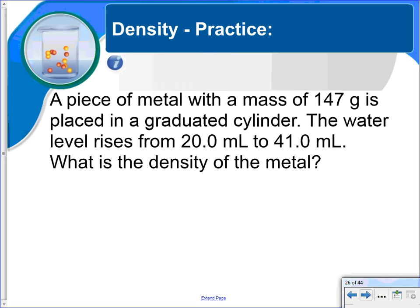Let's look at a couple of examples with this. A piece of metal with a mass of 147 grams is placed in a graduated cylinder. The water level rises from 20 to 41 mL. What is the density of the metal?